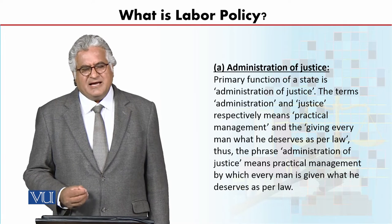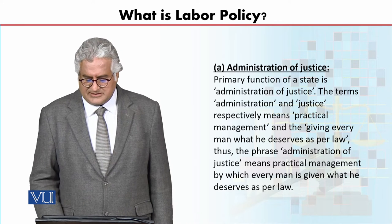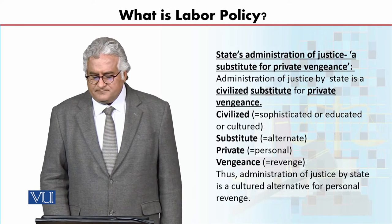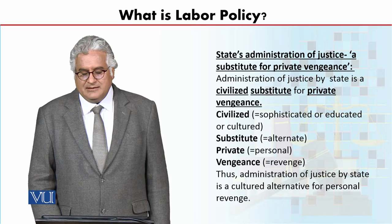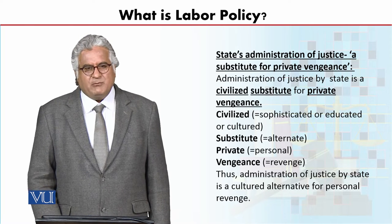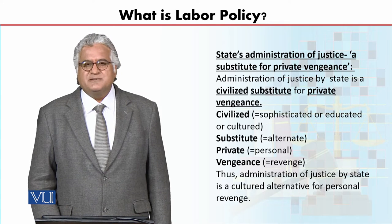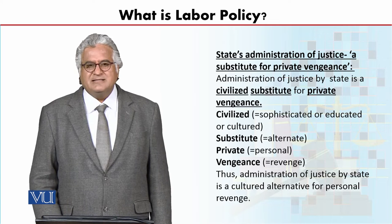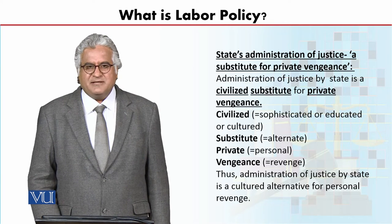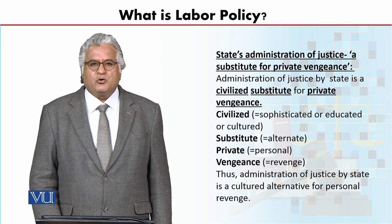Justice means giving every man what is due to him as per law — تو law کے مطابق جو جس کا ہے اسے دے دو، یہ justice کہلاتا ہے۔ اس کے علاوہ کہتے ہیں کہ state's administration of justice is a substitute for private vengeance. Private vengeance کیا ہوتا ہے؟ کہ ذاتی طور پر بدلہ لے لینا۔ پرانے زمانوں میں جب state نہیں تھی اور administration of justice نہیں تھا، تو لوگ اپنے ساتھ جو کسی نے برا کیا ہوتا تھا اس کا بدلہ خود لیتے تھے۔